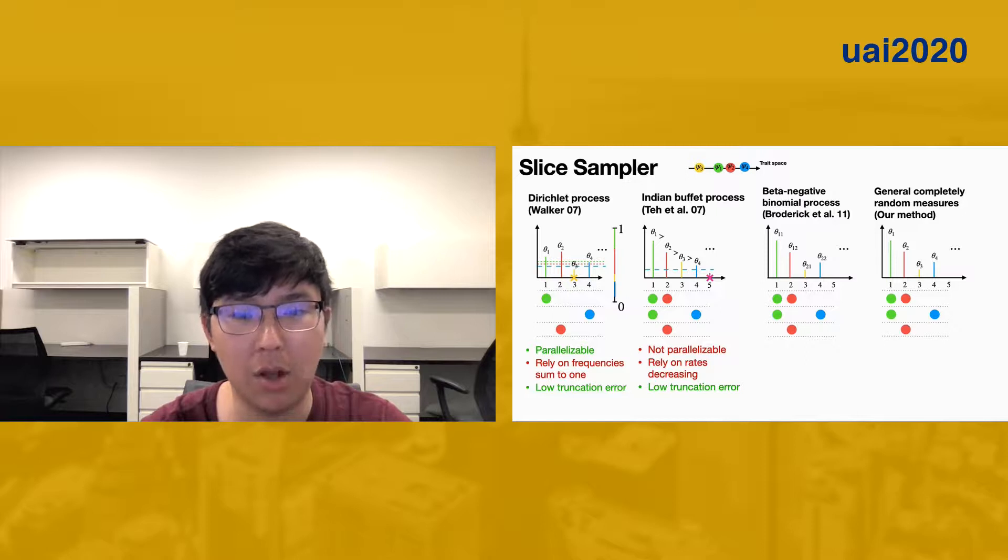Previously, slice sampler was also developed for the beta-negative binomial process that samples from a deterministic sequence selected by the last occupied index. Although this method is parallelizable and does not make any assumption on the rates, this representation by itself is inefficient and generates higher truncation error.